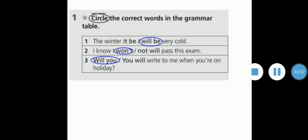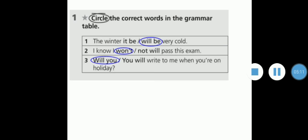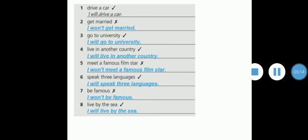Exercise number two: write sentences using will or won't. Here we have sentences we're going to form with will or won't. If we have the tick sign, we're going to put will. If we have the cross sign, we're going to put won't. Number one: I will drive a car. Number two: I won't get married. Number three: I will go to university. Four: I will live in another country. Number five: I won't meet a famous film star. I will speak three languages. I won't be famous. I will live by the sea.